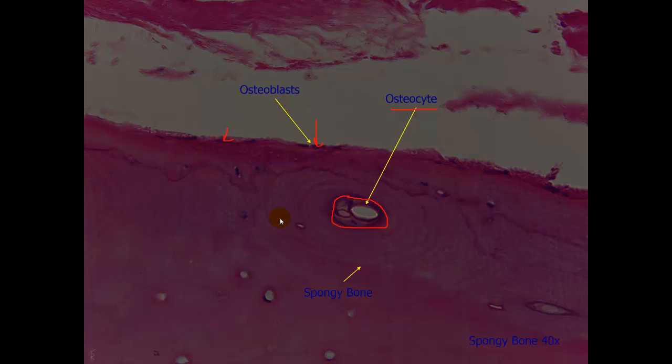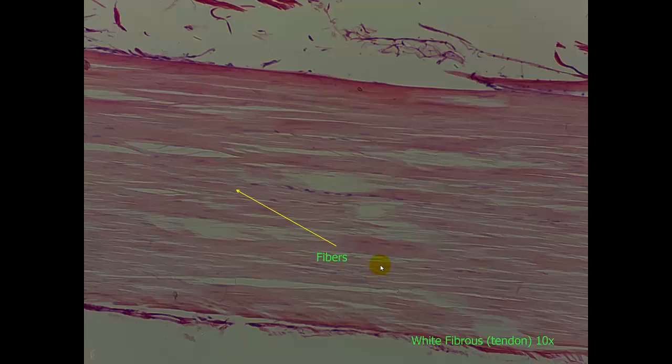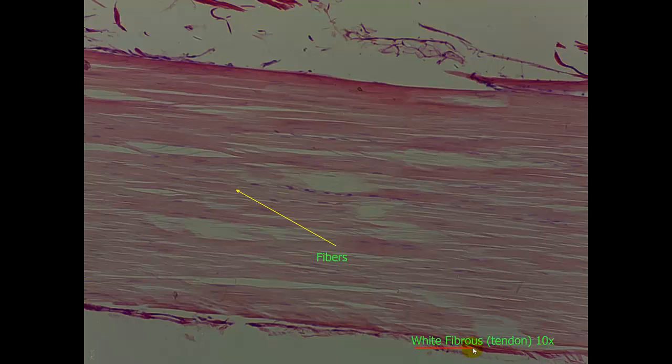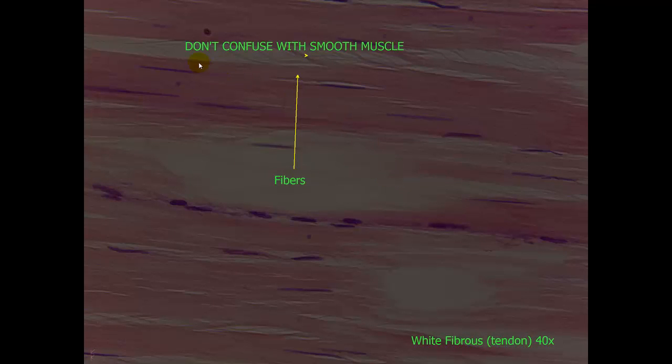Here is a dense regular connective. This is white fibrous. This is from a tendon at a 10x objective. We can see the nuclei of the cells. Those are the purple dots. We can also see the fibers that are running in this direction, which is along the area of stress, which would be running from left to right. One thing that I've seen with students is that they confuse this a lot with smooth muscle. Please don't make that mistake. These are not the fusiform shape. We will look at smooth muscle in another video.